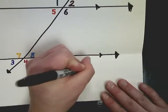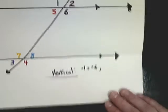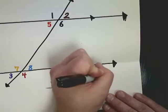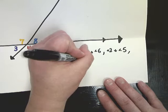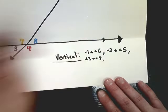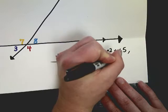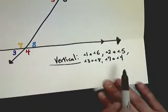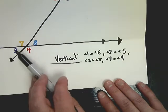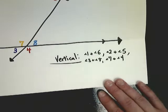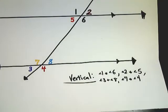The vertical angle pairs, which are congruent, are: 1 and 6, 2 and 5 at the top crossing, and 7 and 4, 3 and 8 at the bottom crossing. All of these pairs are congruent — so if angle 3 is 30 degrees, angle 8 is also 30 degrees.